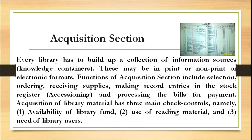Every library must build a collection of information sources, which may be in print, non-print or electronic format. Functions of the acquisition section include selection, ordering, receiving, supplying, making order entries in the stock register, and processing bills for payment. Acquisition of library material has three main controls: availability of library funds, use of reading material, and the needs of library users.